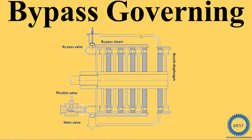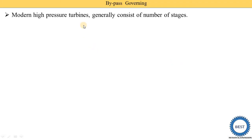In a bypass governing system, there is no blockage or maintenance going on, but its name is 'bypass governing' because additional quantity of steam is required in the further stages. We already know that the turbine consists of a number of stages. After the first few stages, additional steam is required due to loads greater than the economical load. This bypass steam is added and mixed with the steam coming out from the high pressure stage, and then supplied to the further low pressure stages.